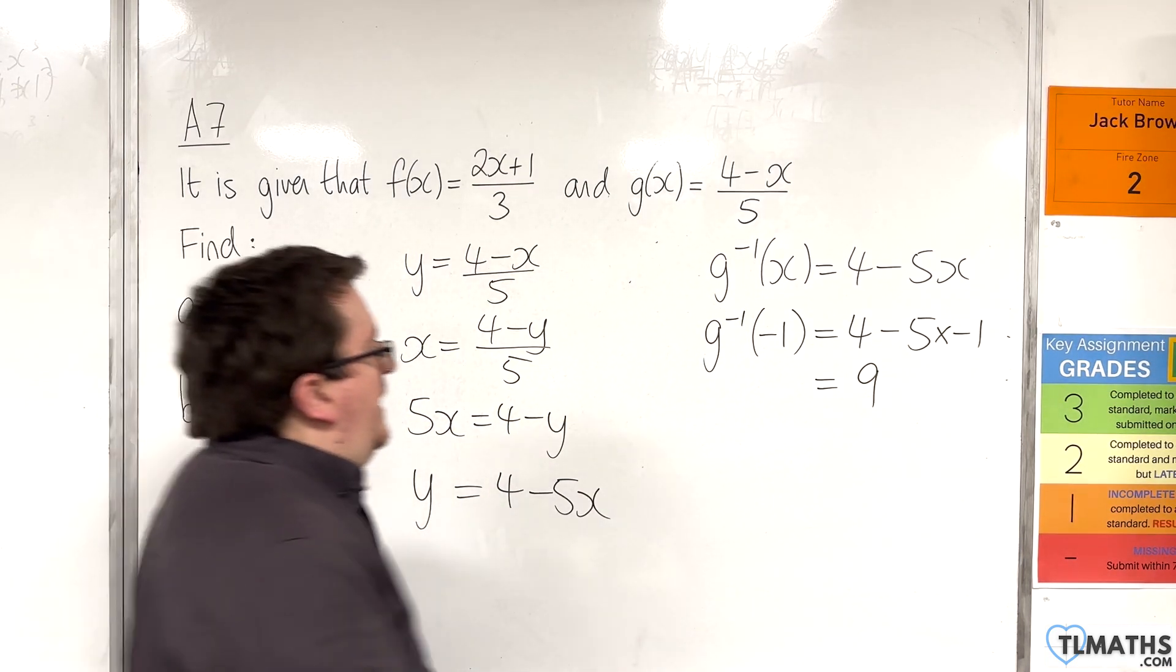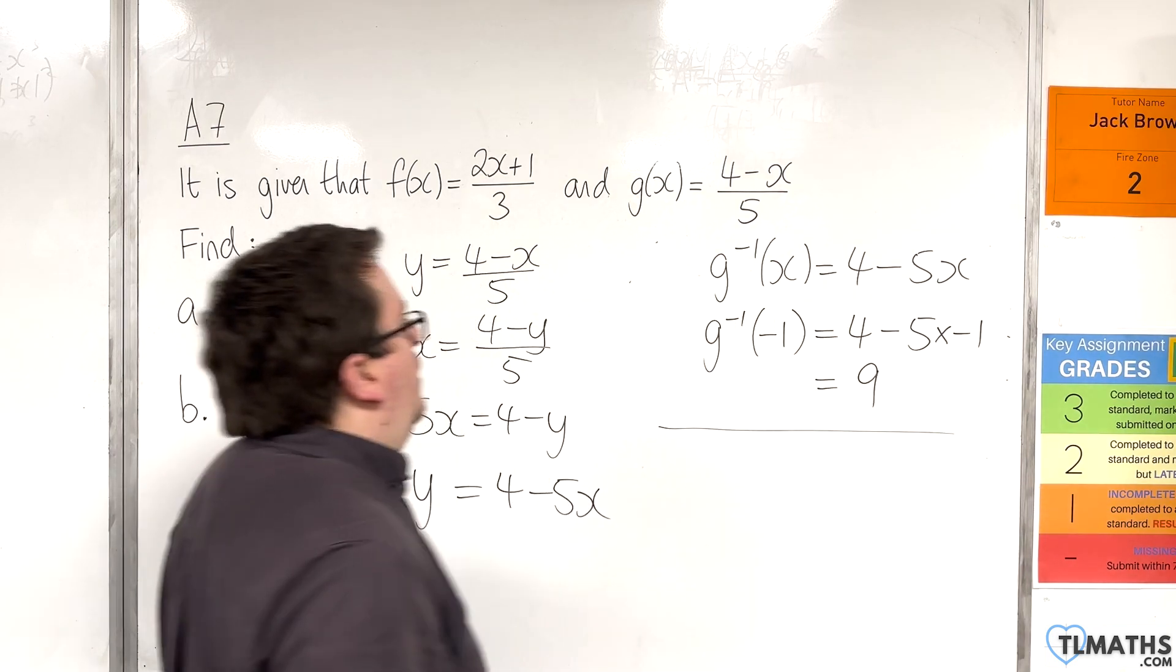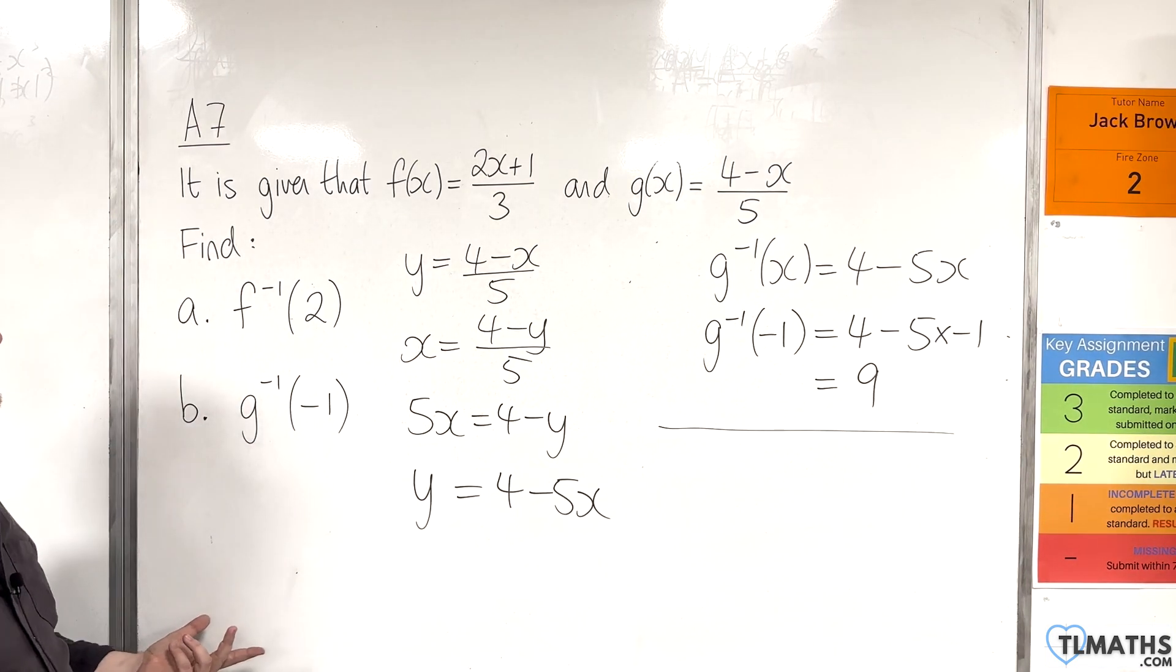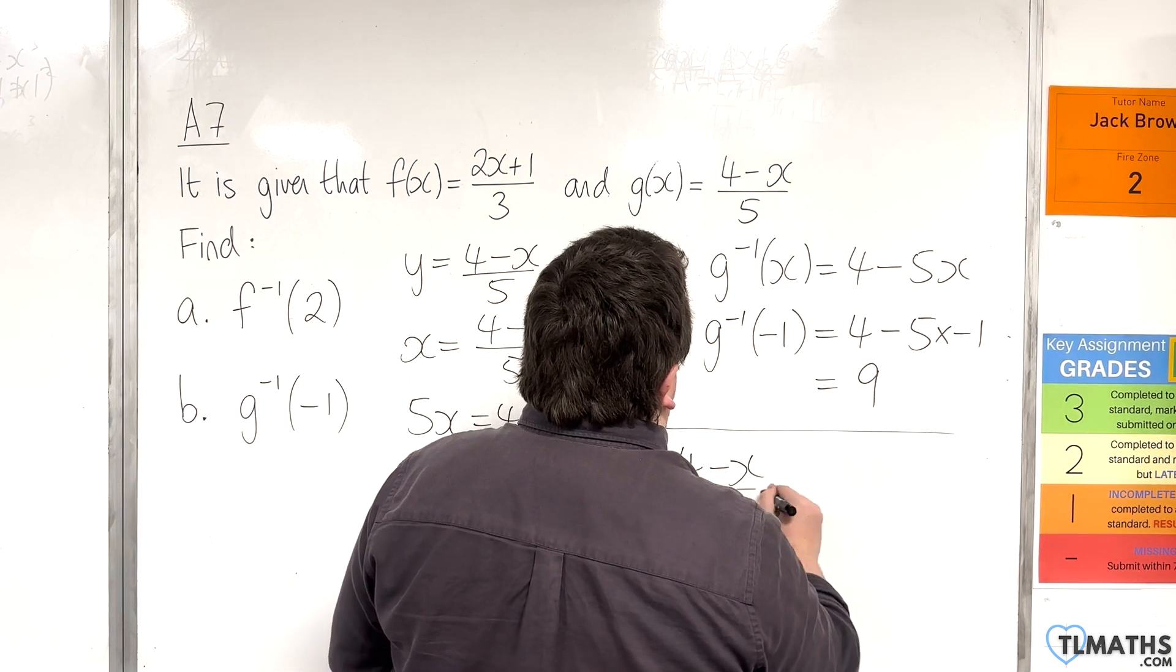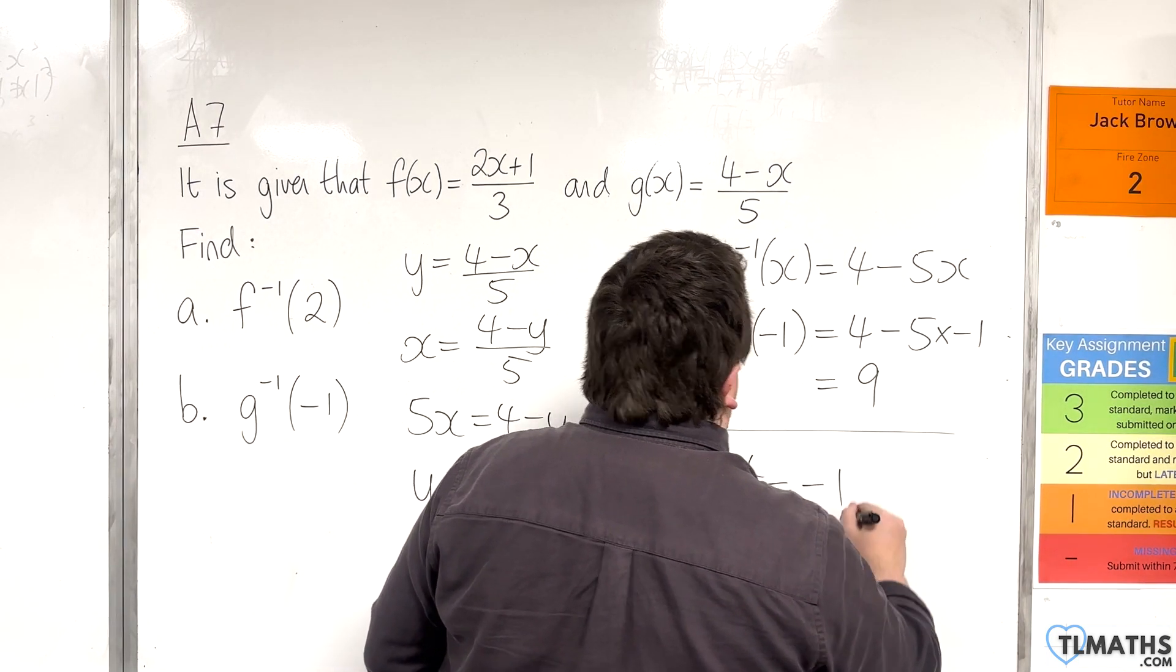So, what I'm saying is, that actually the minus 1 would have been the y coordinate of the original function. So, if I put 4 take away x over 5 equal to minus 1.